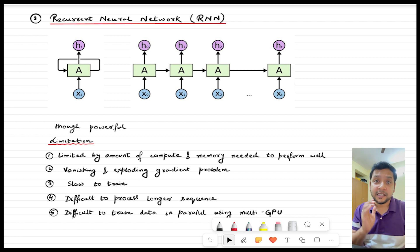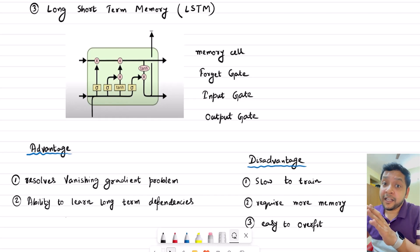Moreover, RNN is very slow to train. If you're giving small input sequences, then RNN can still predict and generate text. But if the input sequence is very large, then it's very difficult for RNN to rightly predict or generate text. Another very big disadvantage of RNN is that it's difficult to train the data in parallel using multi-GPU.